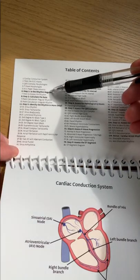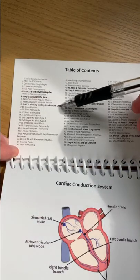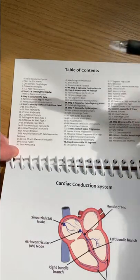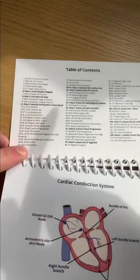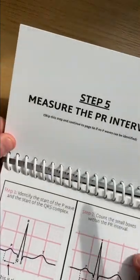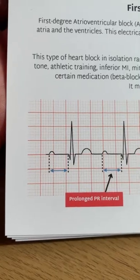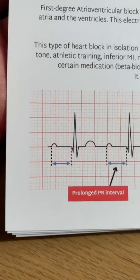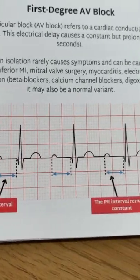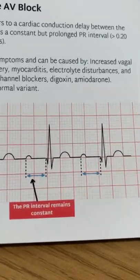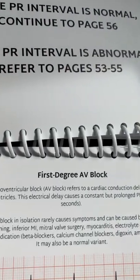So you've figured out that the rhythm is regular, it's a normal rate, and you've identified it as sinus. The cardiac axis is normal, but you've noticed that the PR interval is prolonged. If the PR interval is over five small boxes and constant, then you've just diagnosed first degree AV block.